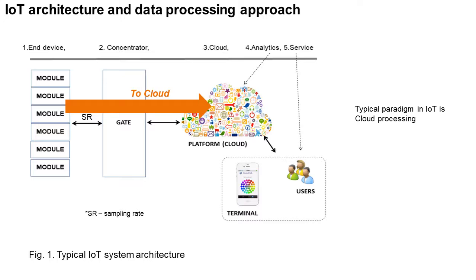A method was previously presented for reducing the amount of data transmitted and stored in IoT systems, which is based on correlation processing. Instead of expensive and complex network devices, developers can use cheap and proven low-speed solutions like ZigBee, WiFi, and Bluetooth Low Energy.